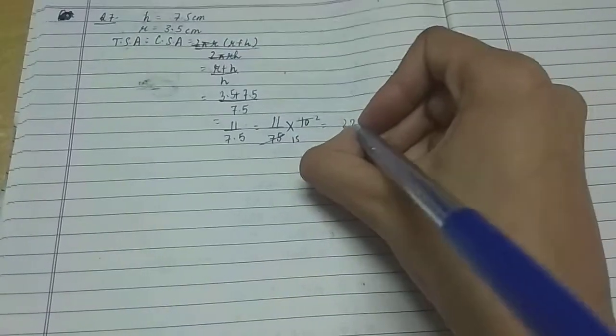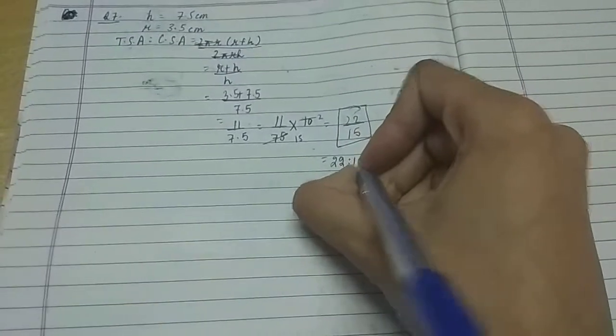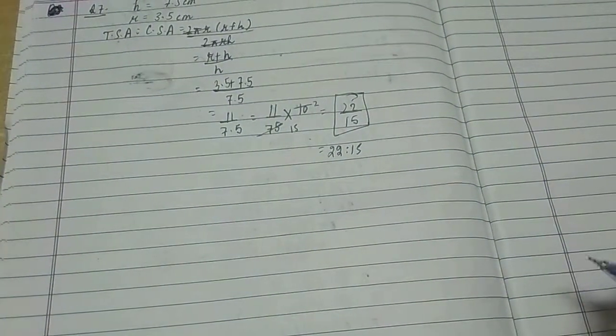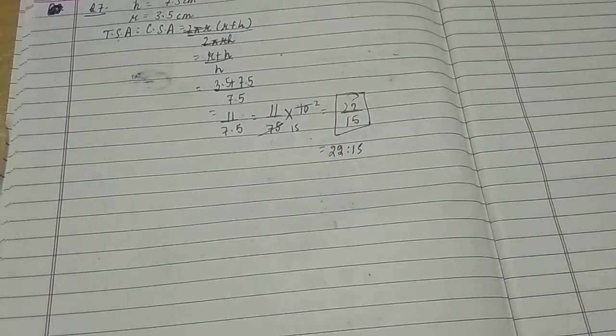...2s are 10, 11 2s are 22 by 15. So this is the required ratio - 22 ratio 15 - between the total surface area and the curved surface area. So this was the solution of question number 7. Thank you for watching this video.